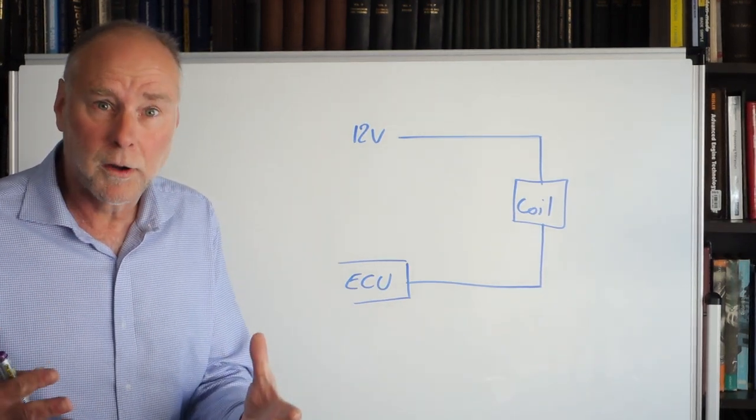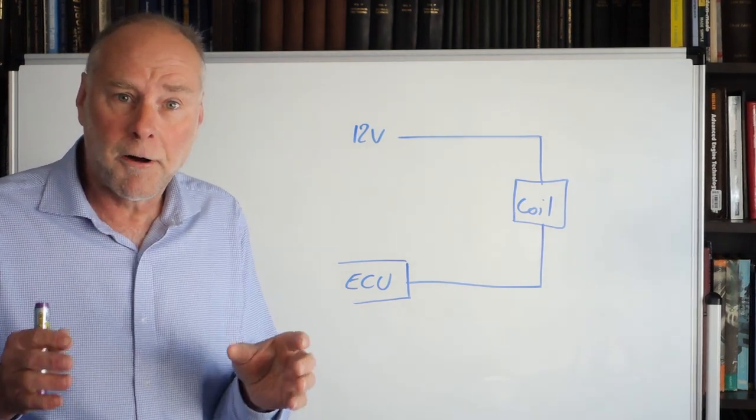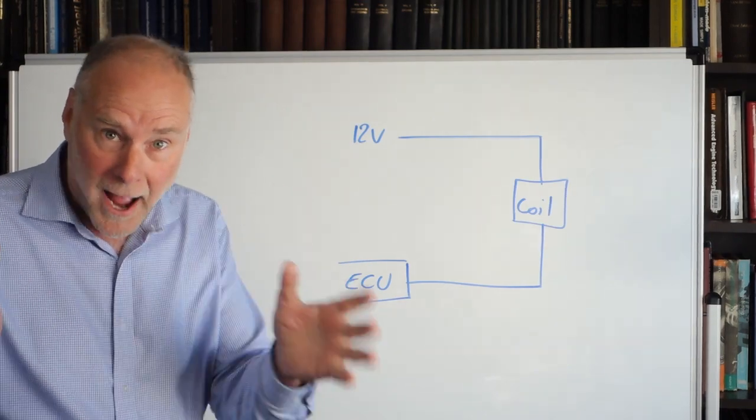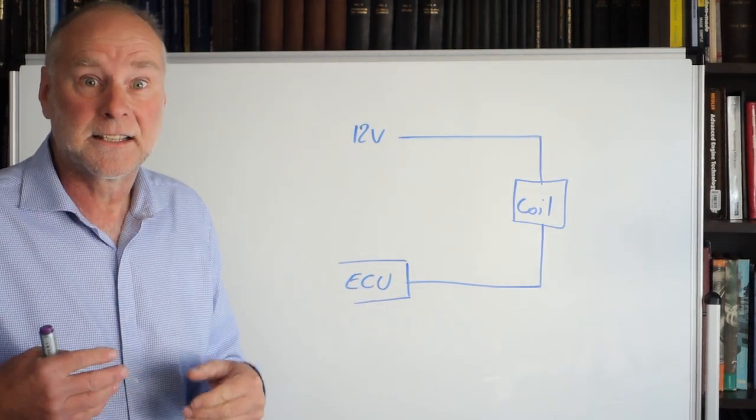Just like an ignition coil in a car, when you switch it off, there's a big spike of voltage that comes out of the coil. That's how the coil generates the spark on the ignition system.